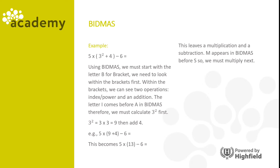This leaves a multiplication and a subtraction. M appears in BIDMAS before S, so we need to deal with the multiplication next. Five times thirteen is sixty-five. Finally, we subtract six: sixty-five minus six gives us the answer of fifty-nine.